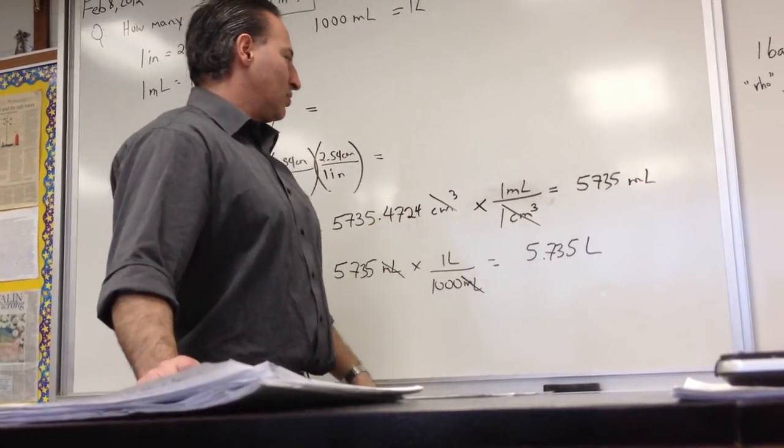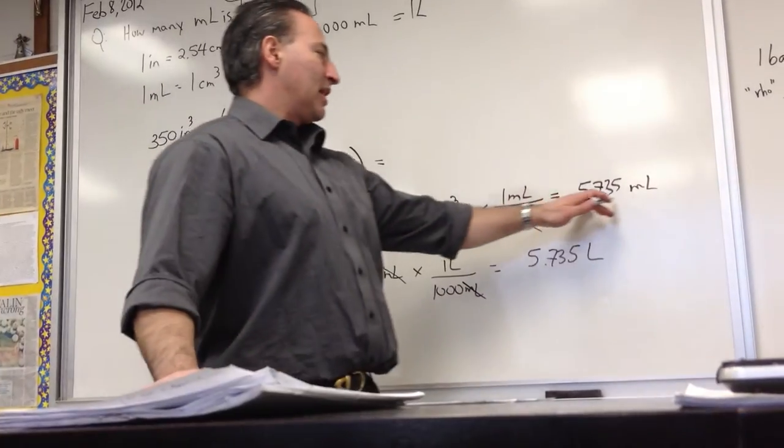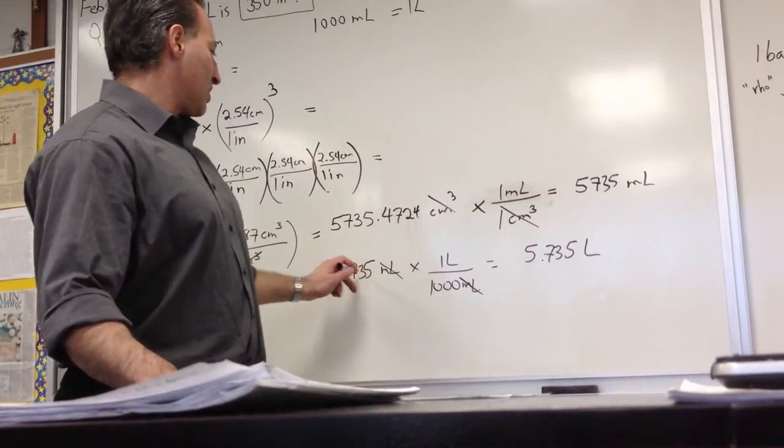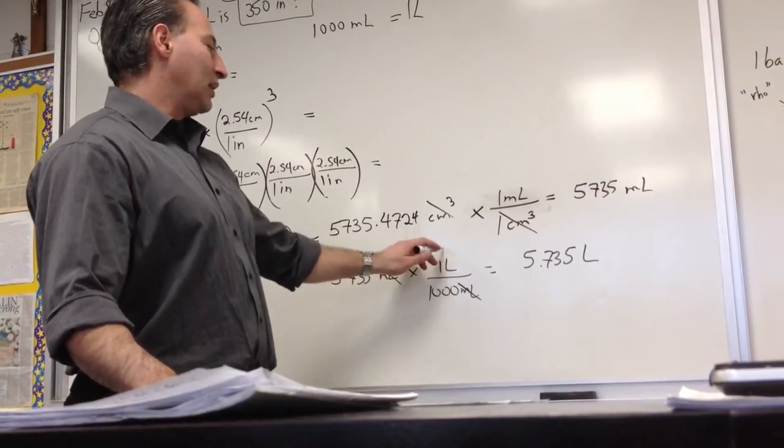This allows you to cancel centimeters, and we end up with an answer of 5,735 milliliters. We now convert it to liters by dividing by 1,000. 1 liter per 1,000.